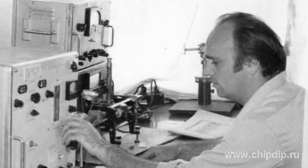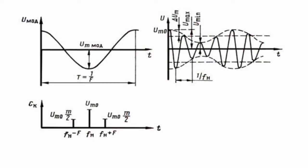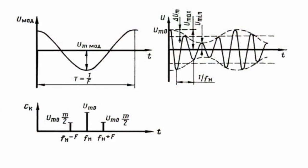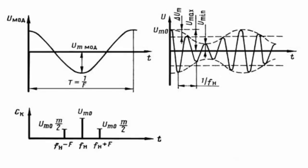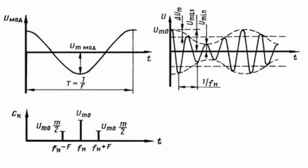At usual amplitude modulation, information exists in each of two side frequency bands. At single band modulation, fluctuations with carrier frequency and frequencies of one of the side bands are usually suppressed.